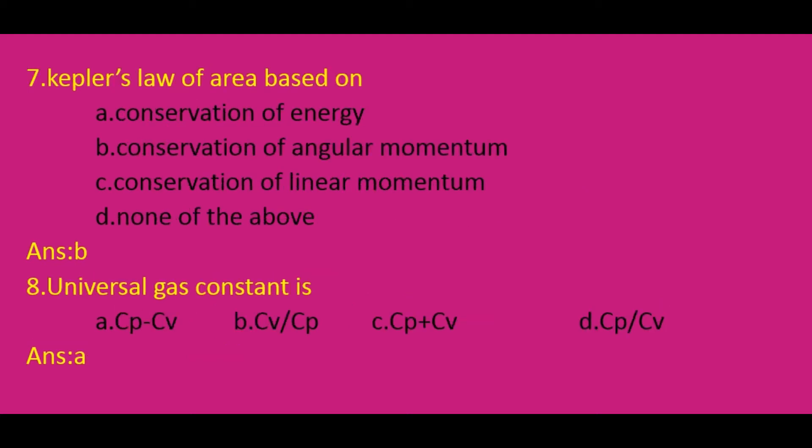Kepler's law of area is based on the conservation of angular momentum. The answer is B. Next, the universal gas constant is given by the equation Cp − Cv. The correct option is A.